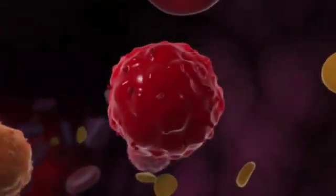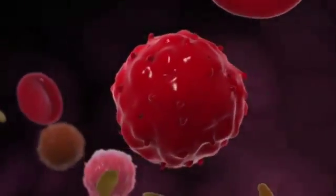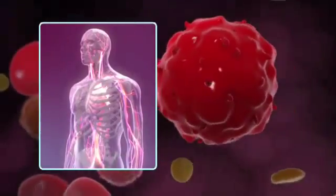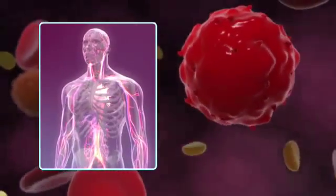Hematopoietic stem cells found in cord blood have been used for 20 years to help regenerate the body's blood and immune system.